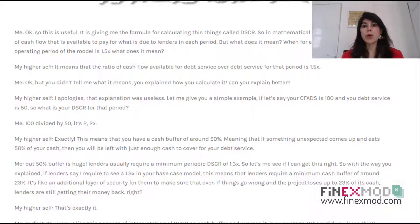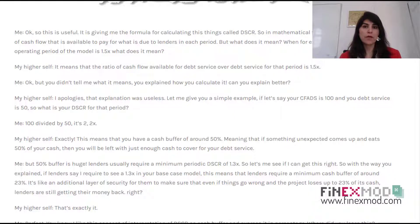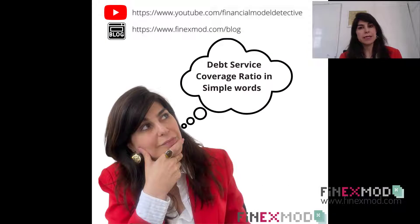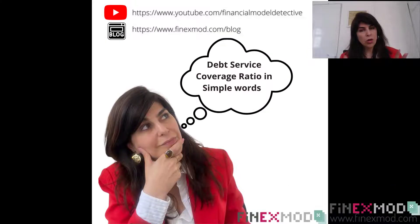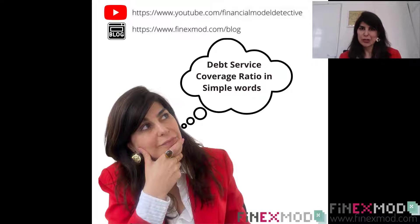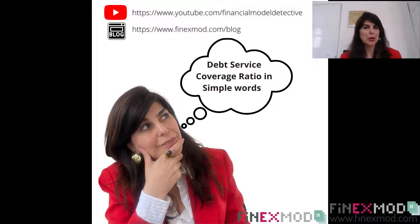So what does that mean given this definition of cash buffer and break-even analysis? Can we interpret this 1.3 requirement by the lender? With the same logic, a 1.3 requirement means that the lenders need a cash buffer of at least 23%. If it is below 23%, they say that if something goes wrong, they don't have much cash to secure themselves against downsides. So they require 1.3X to make sure there is enough cash to pay back the loan if things go wrong, and the cash buffer they require is 23%.